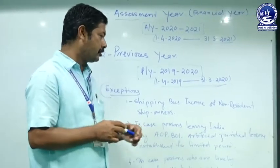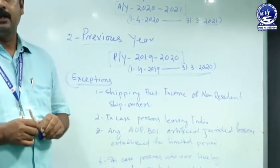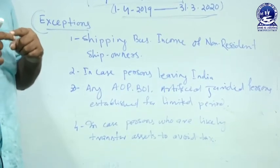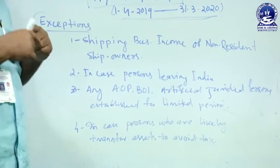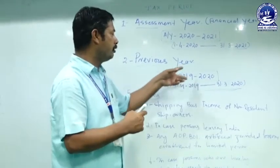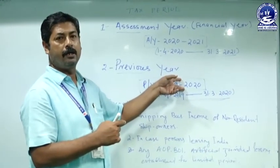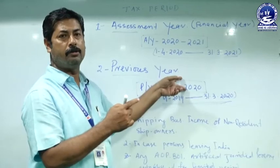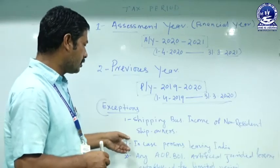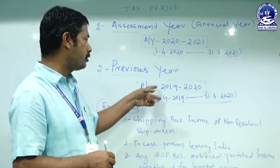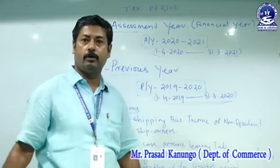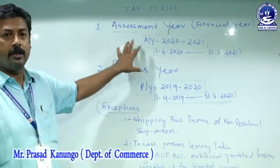The second exceptional case: if a person living in India derives income during the previous year but has the intention to leave India and not return in the assessment year. For example, if the person derives income during the previous year 2019–2020 and leaves India in 2019–2020 with the intention not to return in assessment year 2020–2021, then that person is bound to pay the tax in 2019–2020 itself, not waiting for the assessment year 2020–2021.